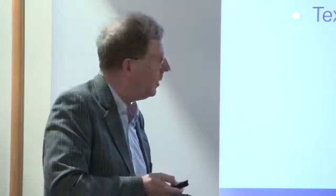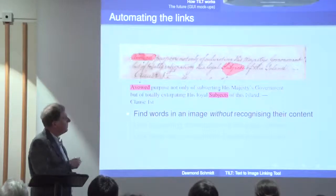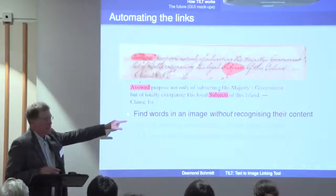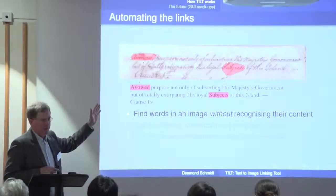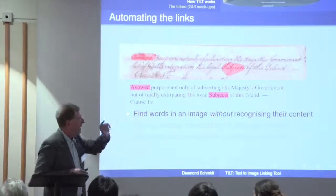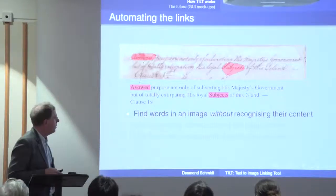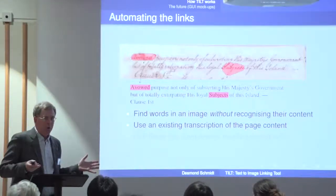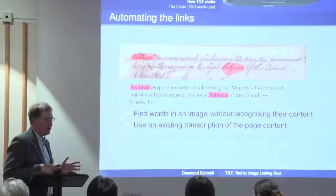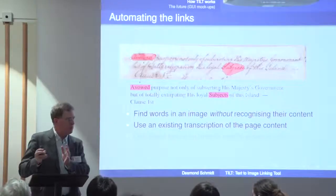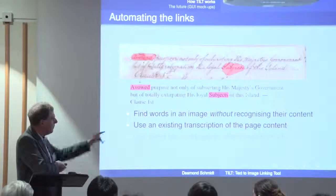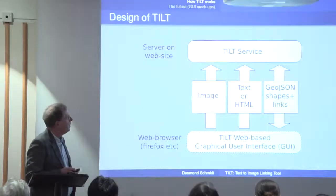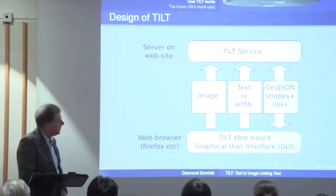The key differences between TILT and the others are basically two. First, I try to automate the process of finding links: the idea is to find words in an image — unlike the Transcriptorium project, we don't try to recognize their content, we just identify that something is a word. This relies on the existence of a transcription of the page content already, which in digital humanities we very often have — maybe a rough one or a transcription of a different version — and the idea is to link these two components in a mostly or entirely automatic fashion.